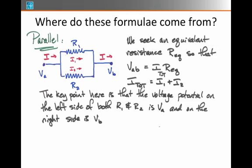The key point here is that the voltage potential on the left side of both R1 and R2 is VA and the voltage on the right side of these two resistors is VB. Therefore, VB minus VA has to equal the voltage drop across resistor one. So I'm going to write that as I1 times R1 by Ohm's law. Likewise, VB minus VA has to equal I2 times R2 because that's the voltage drop across R2 by Ohm's law.